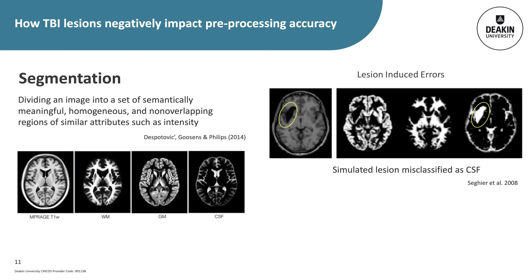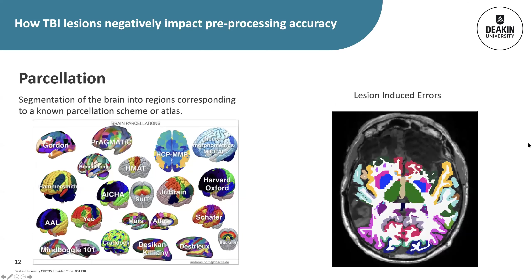In order to utilise the normalised images to infer something about morphological changes in the brain, images need to be segmented — automatically divided into meaningful regions where voxels sharing the same label have similar attributes such as signal intensity. In MRI studies, image segmentation typically produces maps of grey matter, white matter, and CSF. To calculate measures of volume and cortical thickness for specific regions, images are often further parcellated into regions corresponding to an atlas with known neuroanatomical borders.